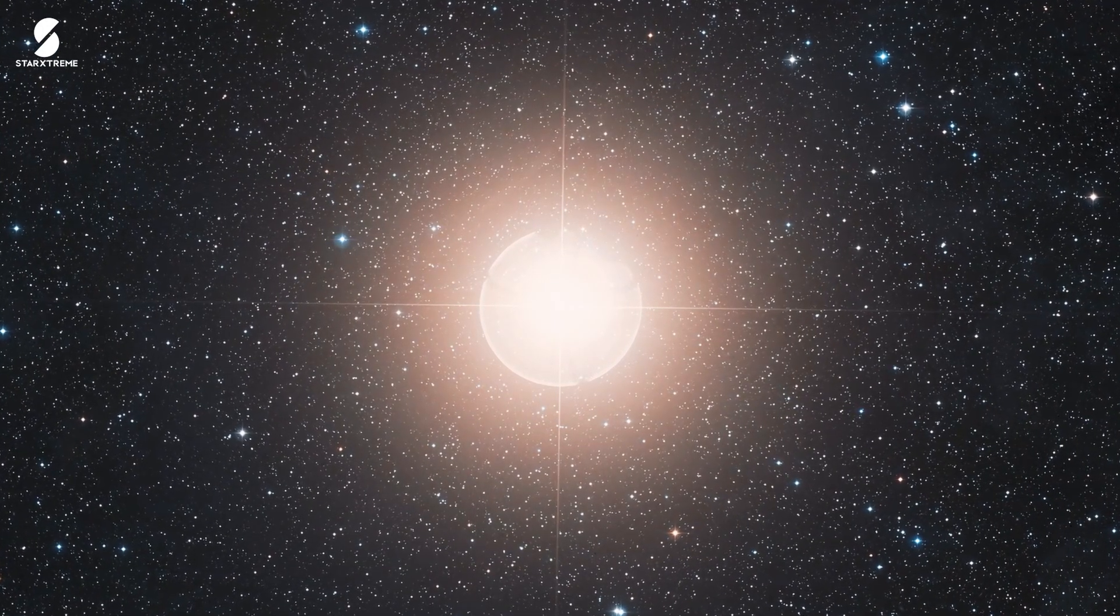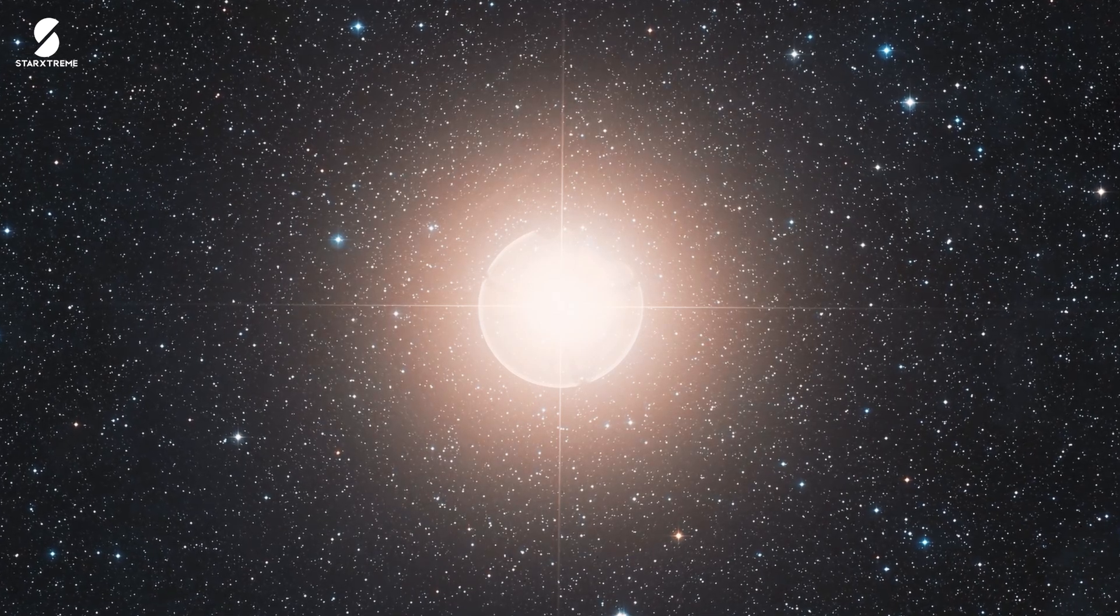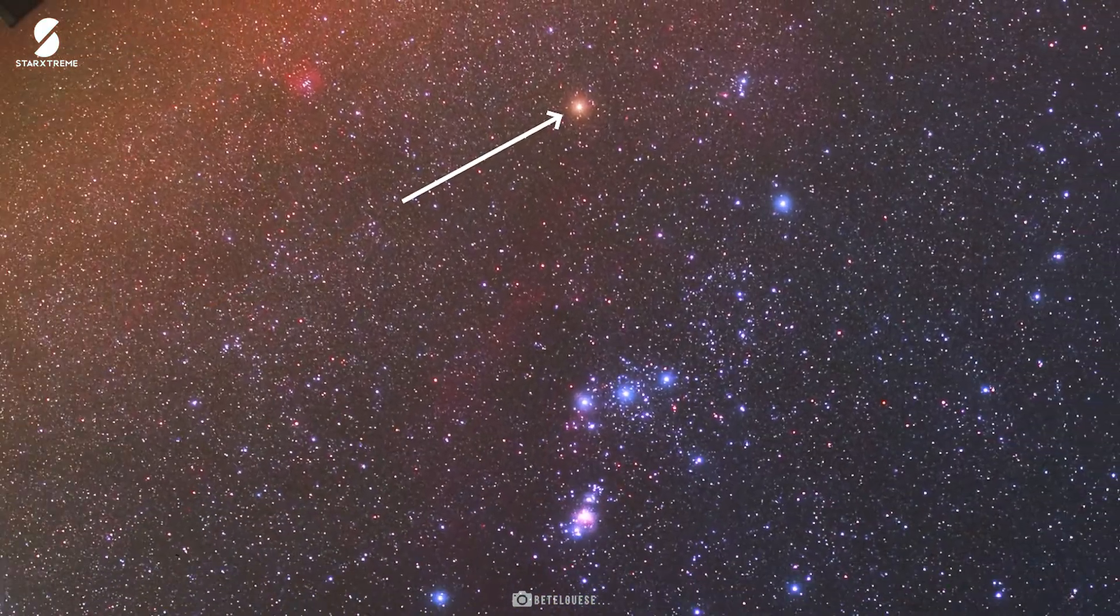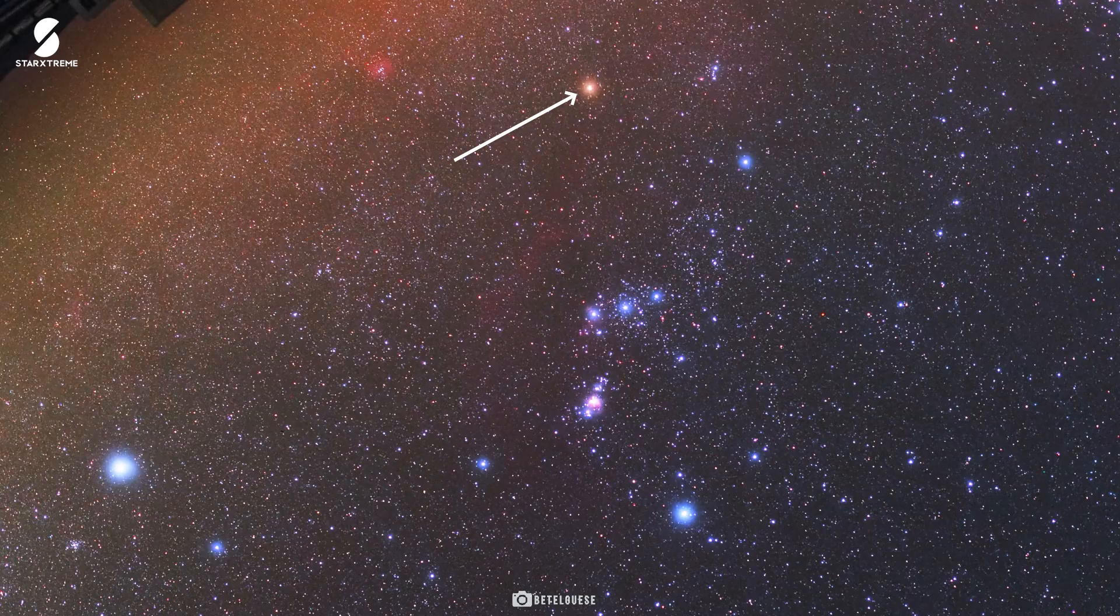Betelgeuse, located in the constellation Orion, is one of the most recognizable stars in the sky. Its vibrant red hue and prominent position have made it a favorite among stargazers and astronomers alike.